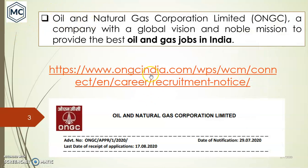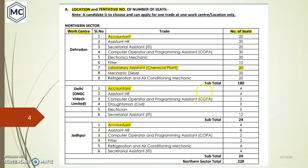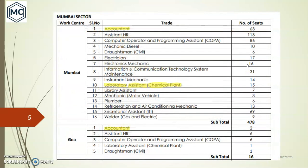The recruitment advertisement was dated 29th July. There are a number of first apprentice positions available in various centers of ONGC — almost 21 centers — with various positions like accountant, laboratory chemist, and assistant HR. You can see various centers listed with different numbers of seats available.